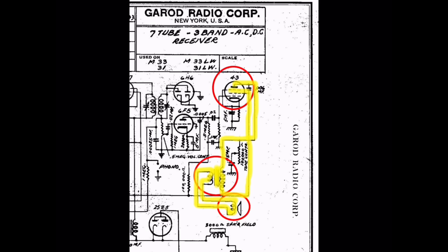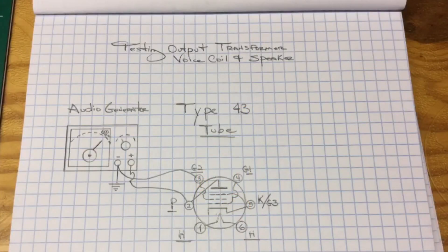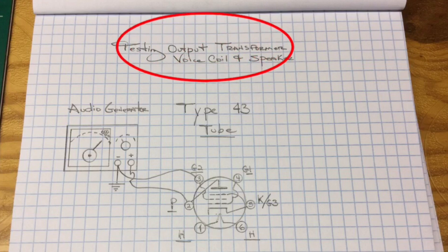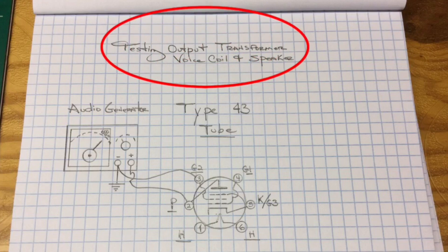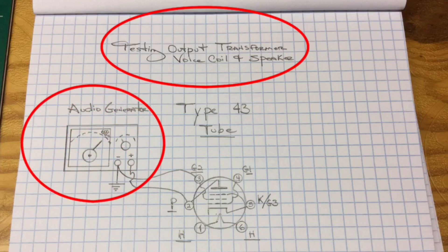So these are the tests that I would do. Let me show you how I'm going to do the test. All right, let's take a closer look. I've got a hand drawing here that I've completed. Again, we'll be testing the output transformer, voice coil, and speaker, leveraging my audio generator, 600 hertz tone.